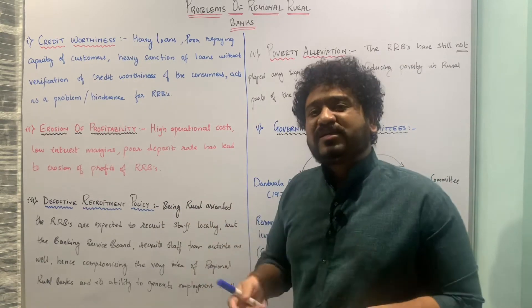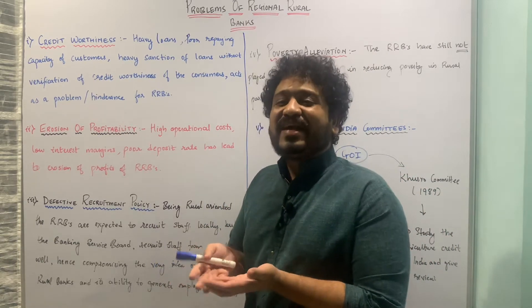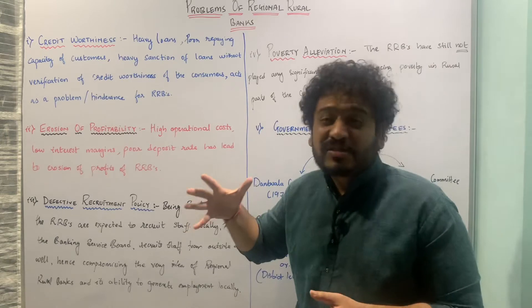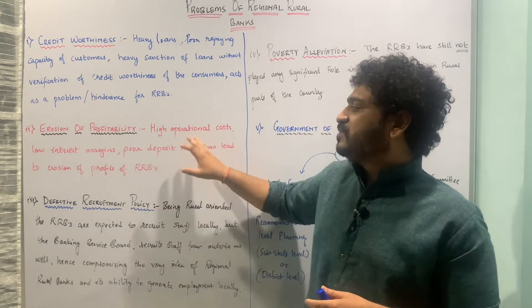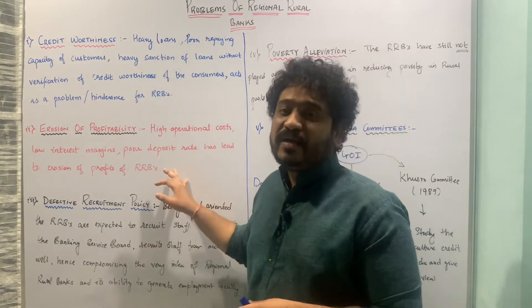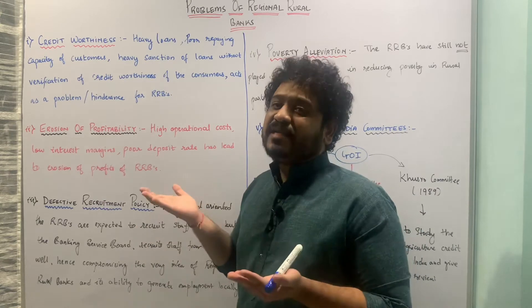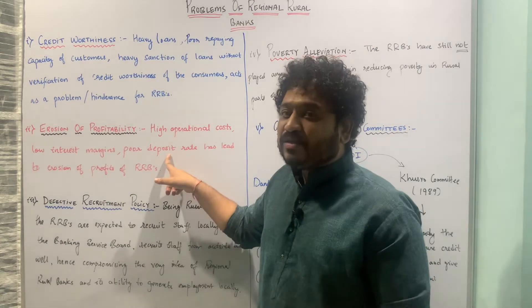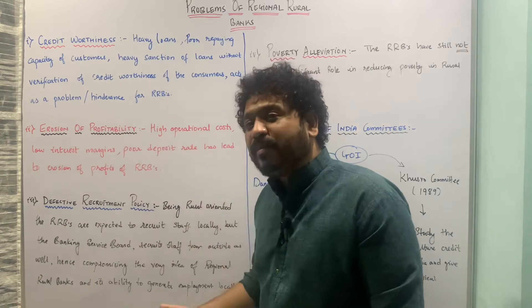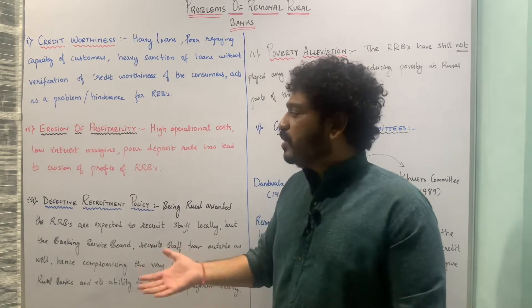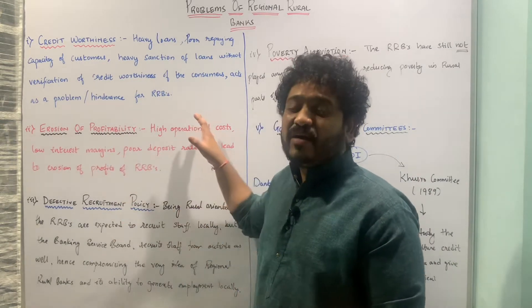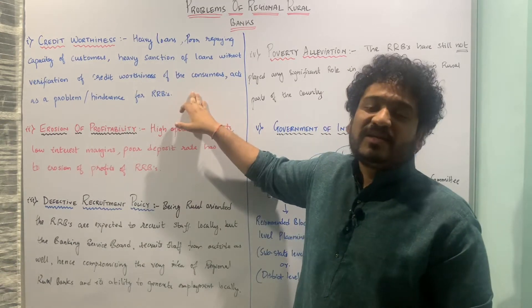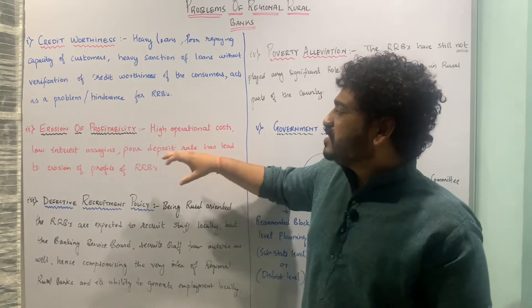Furthermore, the weaker sections do not contribute significantly towards deposits of the bank, so capital is constantly eroded and operational costs go up. To maintain a balance between liquidity and profitability, when deposits are not coming in at a good rate, liquidity goes down. With low interest margins, high costs, and chances of loan default, profitability is further eroded.